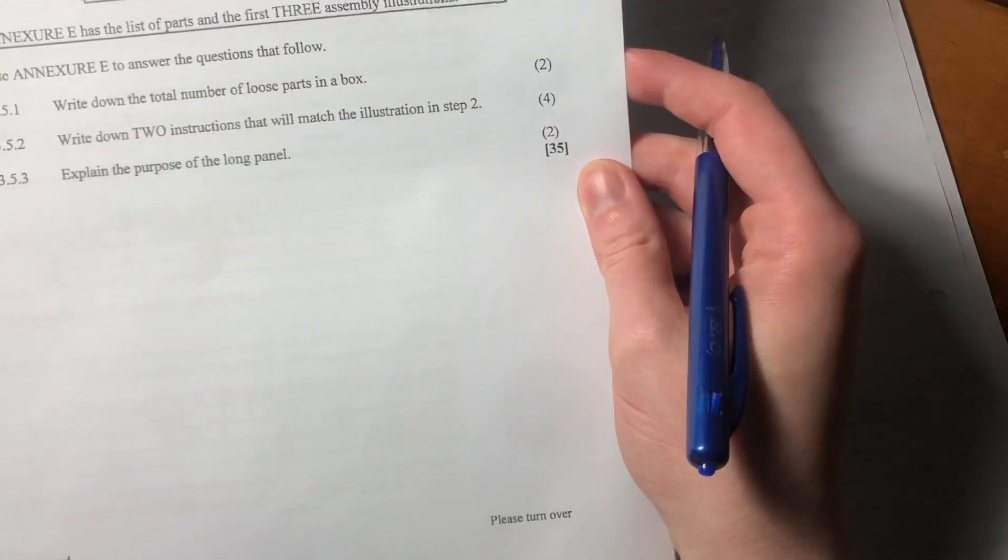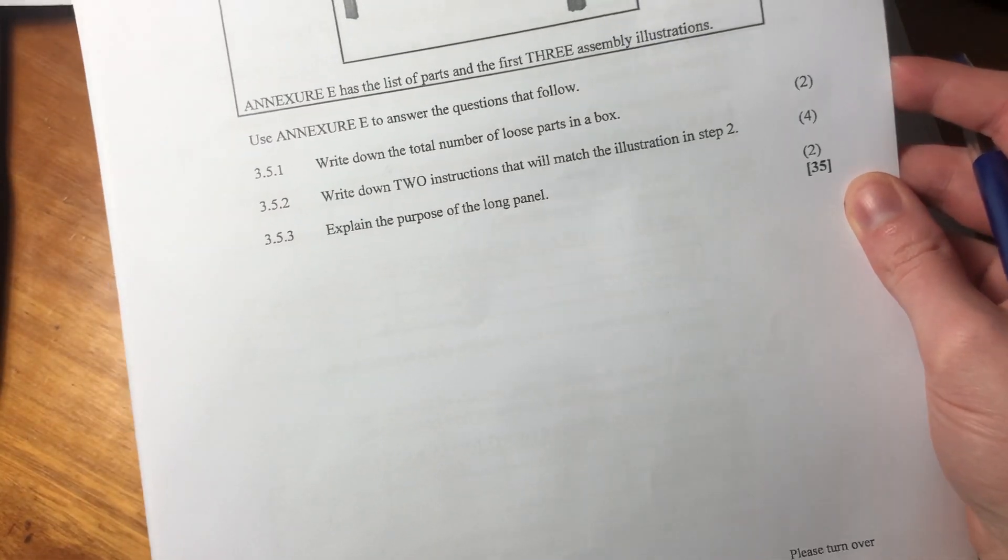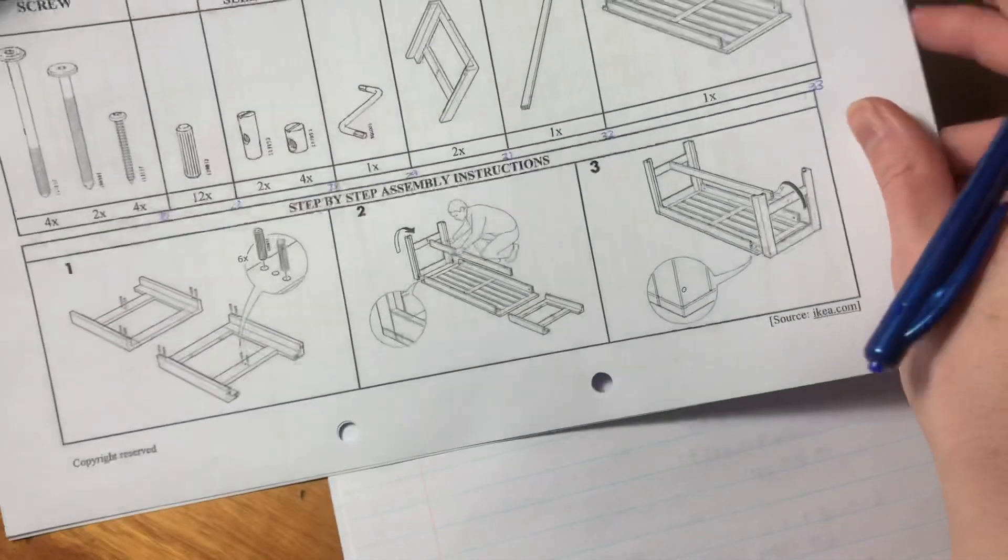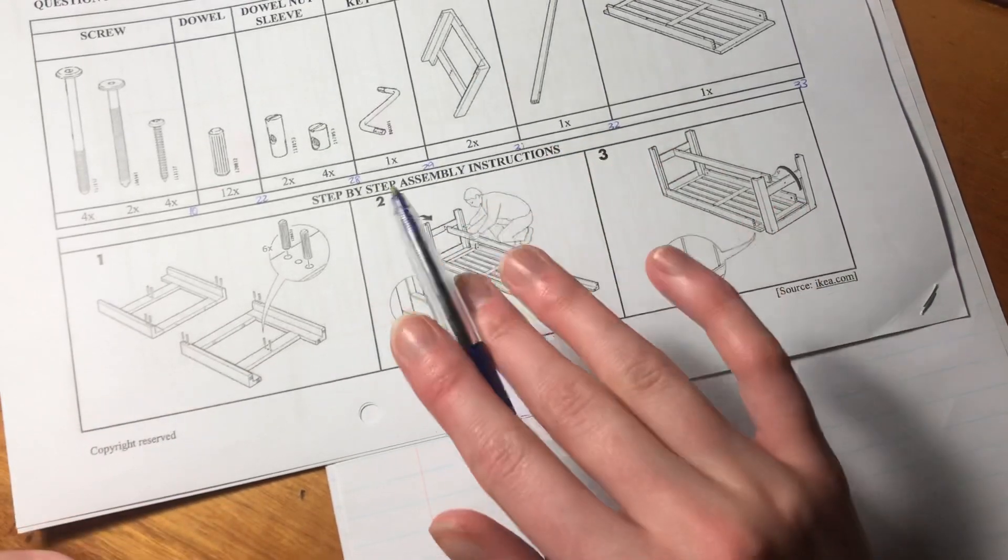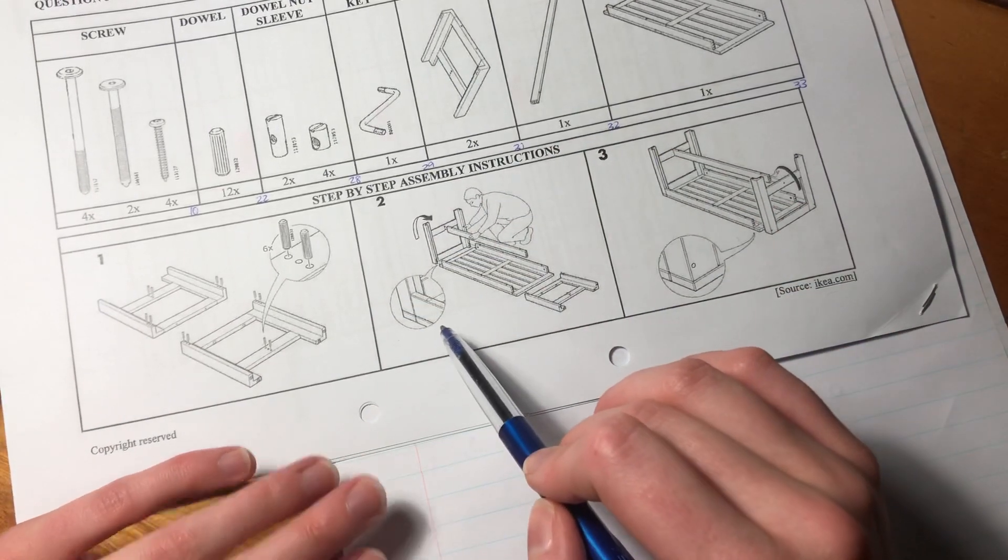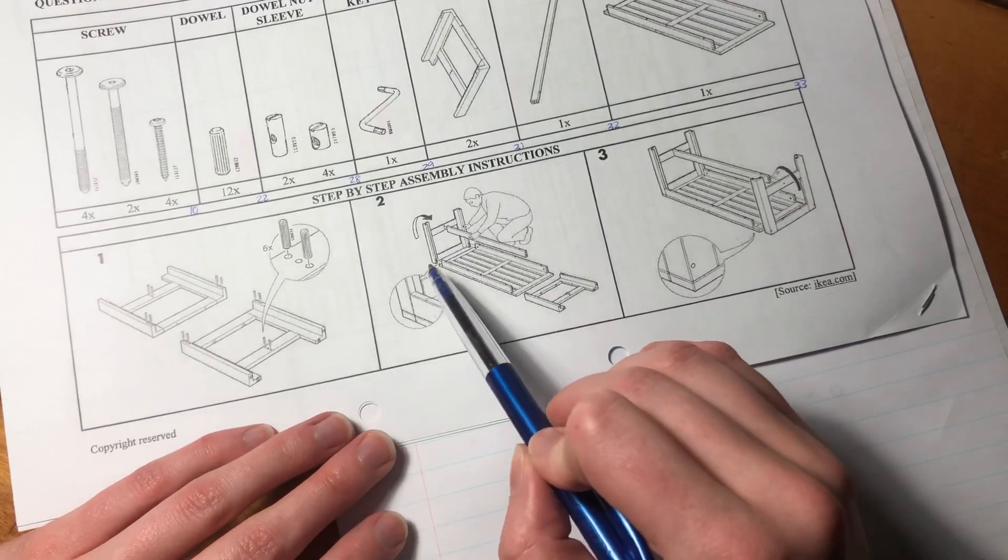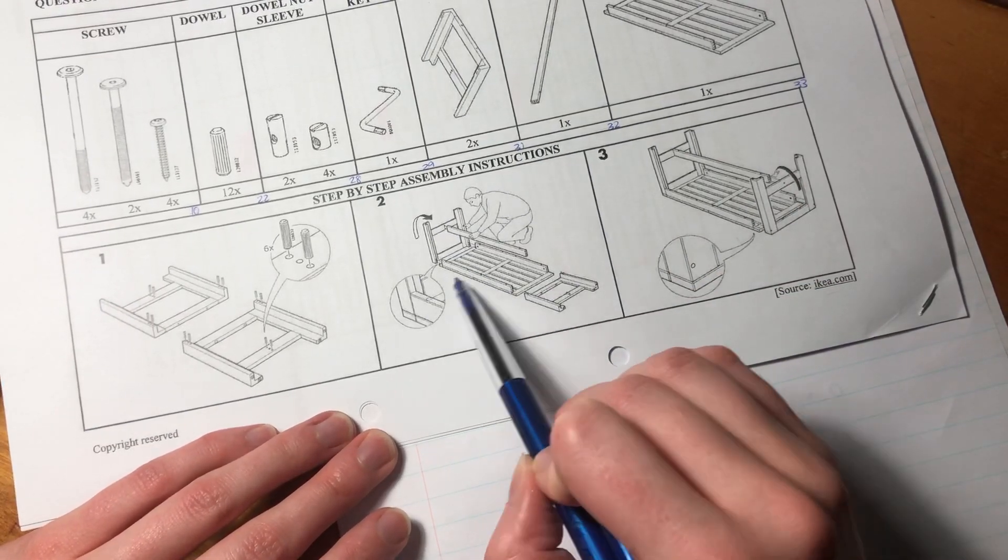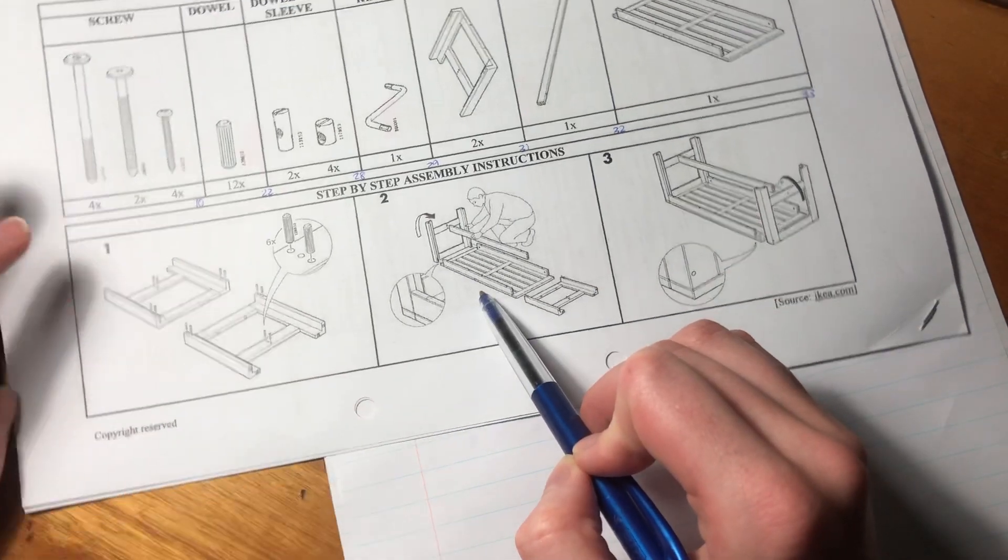So then it says here, write down two instructions that will match the illustration in step two. Oh my goodness, I'm so bad with stuff like this. So basically, there's very little maths involved here, 100% just basic understanding of what's going on and maybe DIY knowledge. If you go to DIY, you'll probably smash this question. But what he's doing from what I can see is he's laid the bench seat on its back, right?